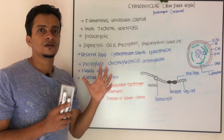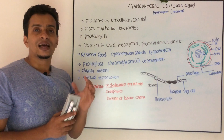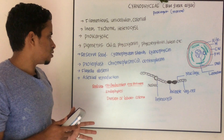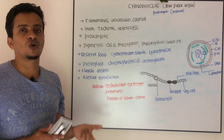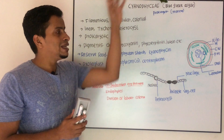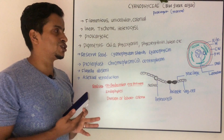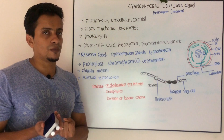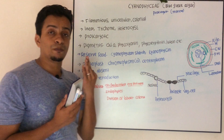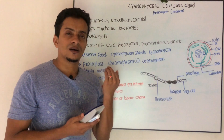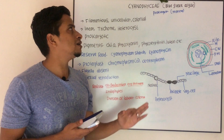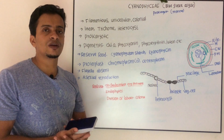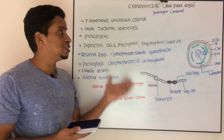You cannot see flagella in this group. Reproduction is by means of asexual methods only; sexual mode of reproduction is absent. They are found in freshwater, marine water, and in symbiotic associations. Near tree trunks and in fields you can find a lot of Cyanophysiae.